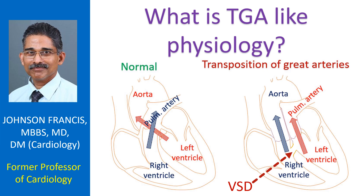TGA-like physiology is cyanotic congenital heart disease with high pulmonary blood flow. The following congenital heart diseases have cyanosis with high pulmonary blood flow, also called transposition-like physiology: dextral transposition of great arteries with ventricular septal defect and no pulmonary stenosis, double outlet right ventricle with VSD and no PS, and tricuspid atresia with VSD and no PS.